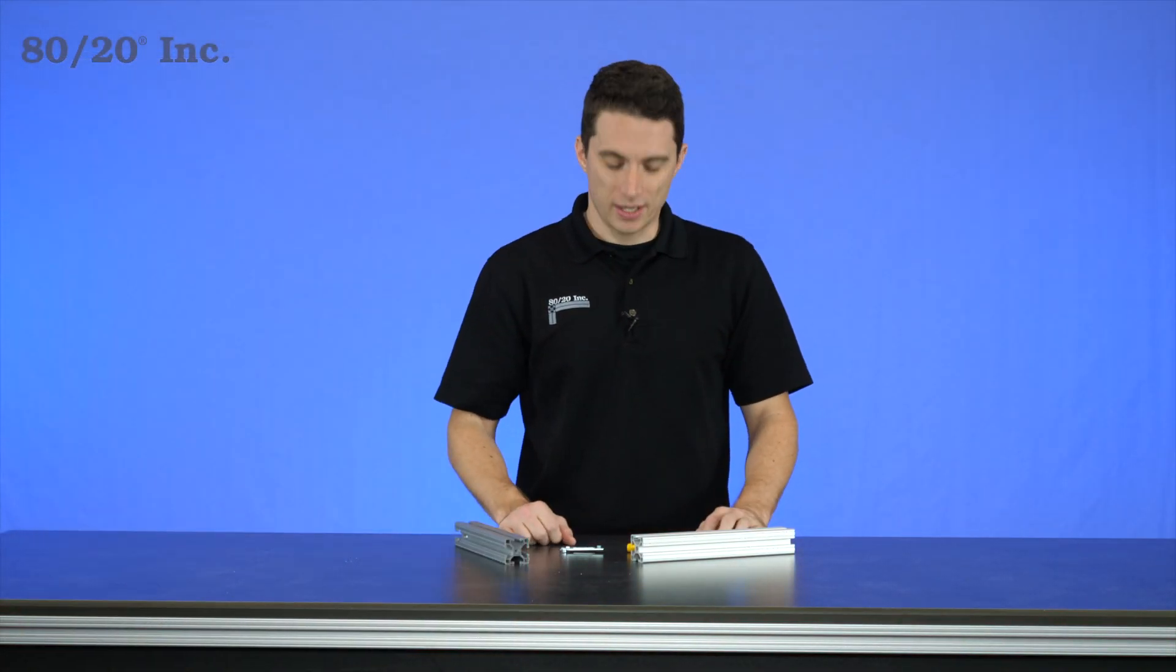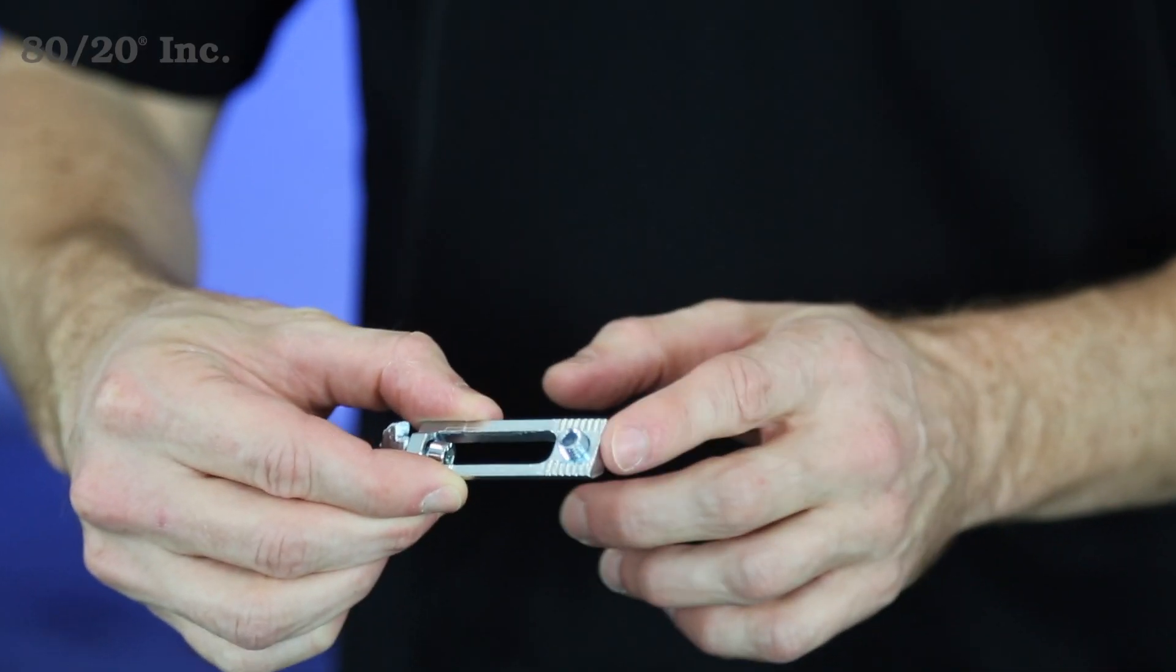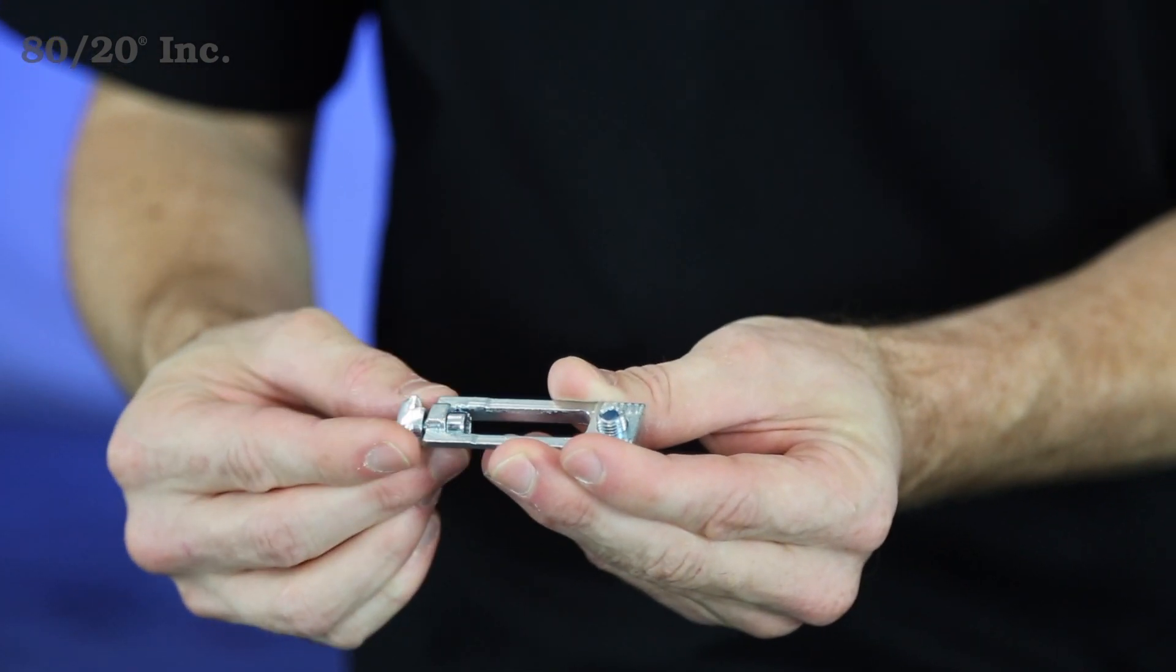Now when it comes to installing the milling connector, it'll come with one set screw on one end and a bolt and a T-nut on the other.